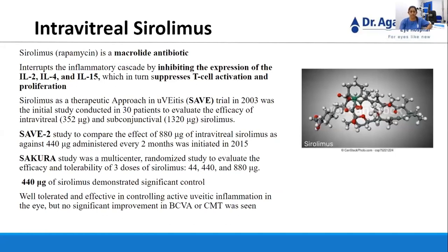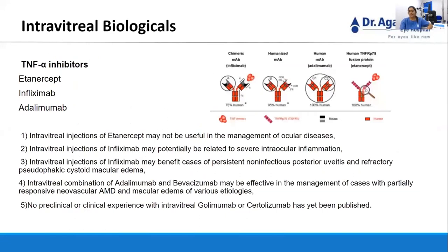The SAVE trial in 2013 was an initial study in 30 patients evaluating the efficacy of intravitreal and subconjunctival sirolimus. The SAVE-2 study compared 880 micrograms of intravitreal sirolimus against 440 micrograms administered every two months, initiated in 2015. The SAKURA study was a multicenter randomized study evaluating three doses of sirolimus — 24, 480, and 880 micrograms. The 440-microgram dose demonstrated significant control and was well tolerated in controlling active uveitic inflammation, but there was no significant improvement in best-corrected visual acuity or central macular thickness. Regarding intravitreal biologicals, the TNF-alpha inhibitors — etanercept, infliximab, and adalimumab — have been explored. Intravitreal etanercept injections may not be useful in management of ocular diseases, and intravitreal infliximab injections may potentially be related to severe intraocular inflammation.